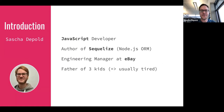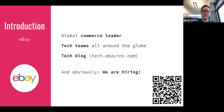I'm Sasha, I work for eBay as an engineering manager and I'm a JavaScript developer. I'm also the author behind Sequelize, which is a Node.js ORM. I'm a father of three kids, which usually means I'm rather tired due to short nights, but today let's see how it goes. eBay, as you probably know, is a global commerce leader with tech teams all around the globe — Australia, Germany, Spain, the US, Israel.